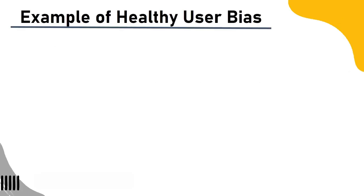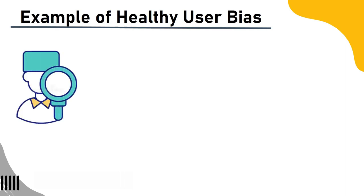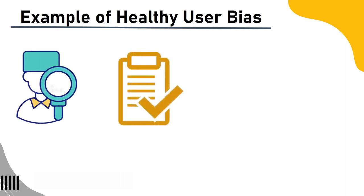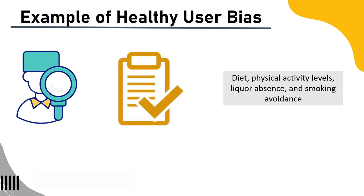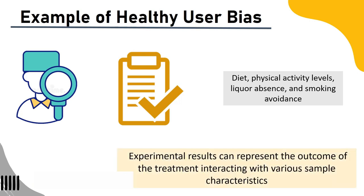Example of healthy user bias: A preventative intervention sample is healthier than the majority of the population in terms of diet, physical activity levels, disease absence, and smoking avoidance. Instead of just the therapy itself, the experimental results may represent the outcome of the treatment interacting with various sample characteristics.